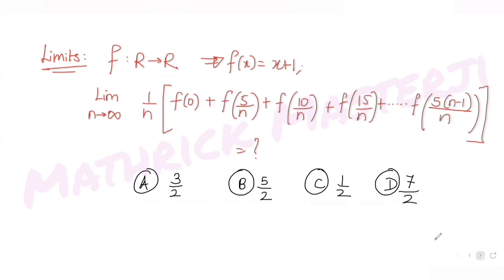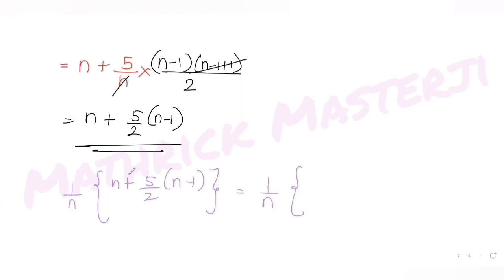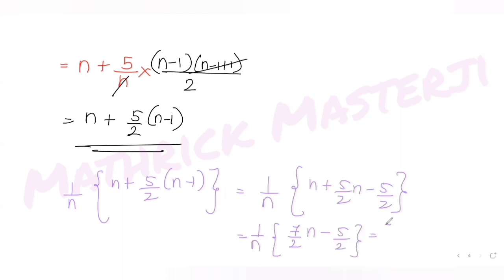Now we multiply this entire sum by 1 over n as given in the expression. So 1 over n times the sum n plus 5 over 2 times n minus 1. Expanding: 1 over n times n gives 1, and 5 over 2 times n minus 1 over n gives 5 over 2 minus 5 over 2n. Combined, that simplifies to 7 over 2 minus 5 over 2n.